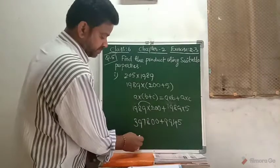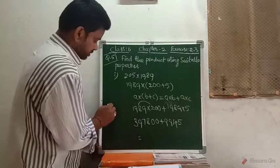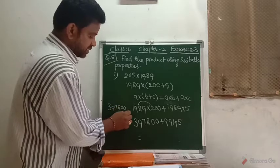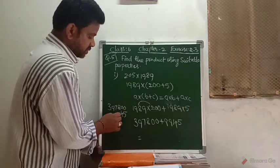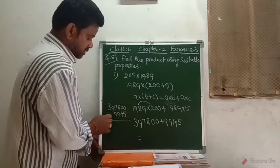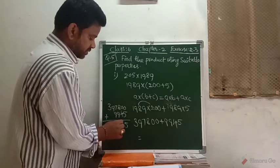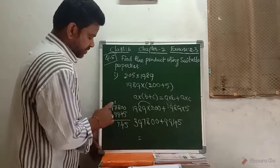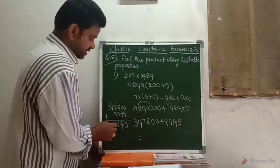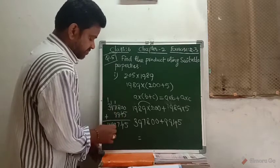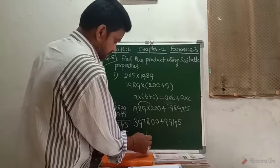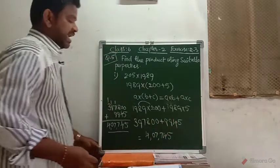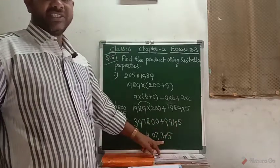5 times 9 is 45 plus 4 is 49; 5 times 1 is 5 plus 4 is 9. Now you add these two numbers together. The final result of 205 into 1989 is 4,07,745.